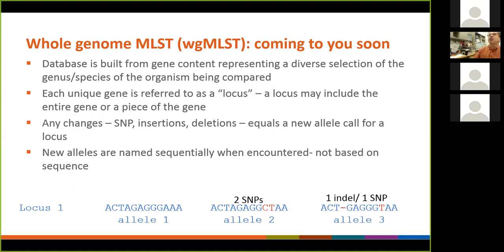Any changes in a locus — or gene, and I'm going to use those two terms interchangeably — means they're different. So in a genome we have locus one, the first gene. The first Salmonella we sequence has a particular sequence — we just call that allele one. Now we sequence another Salmonella and that same gene is slightly different — we have two SNPs marked in red — so we're going to call this allele two. We sequence another Salmonella, it's the same as allele one — we call it allele one. We sequence another one, it has one indel and one SNP — we're going to call it allele three.